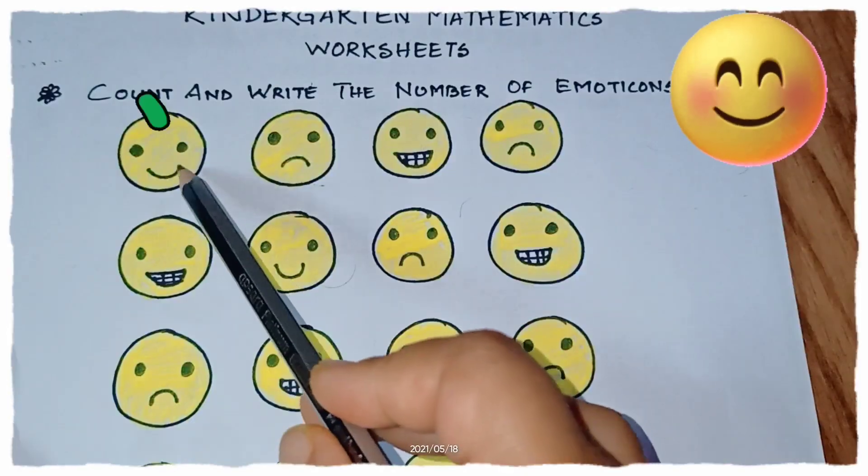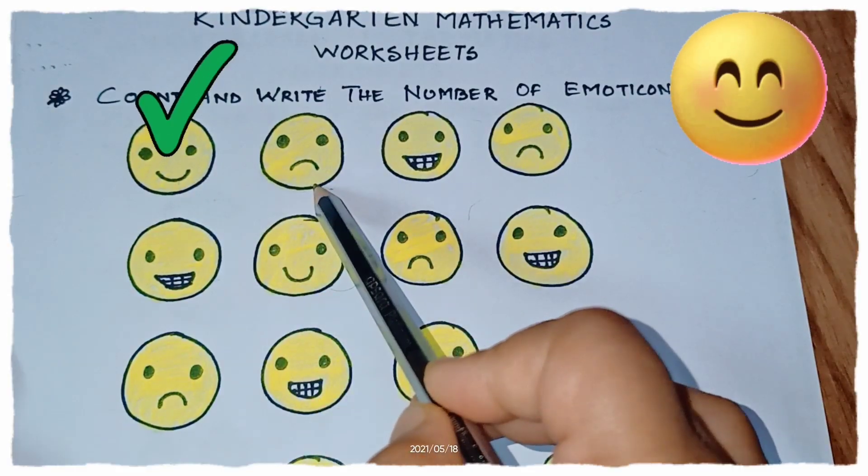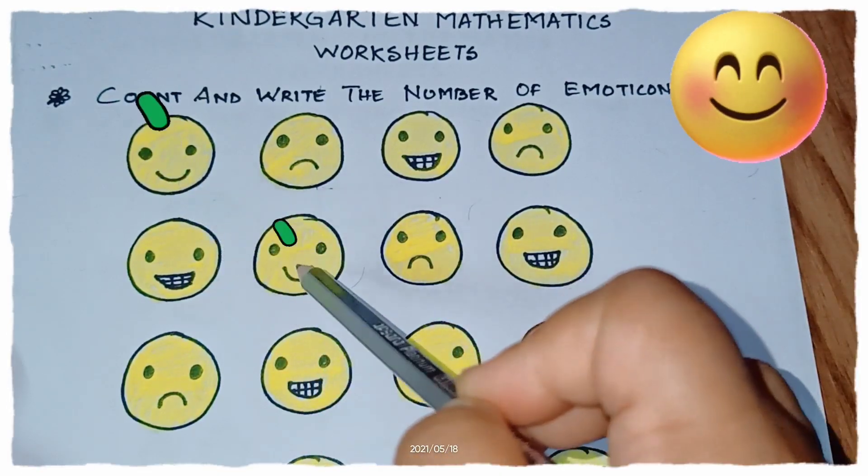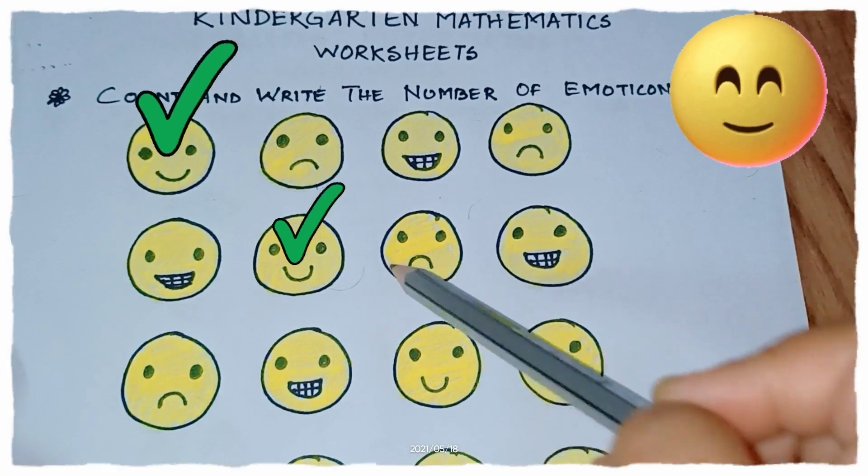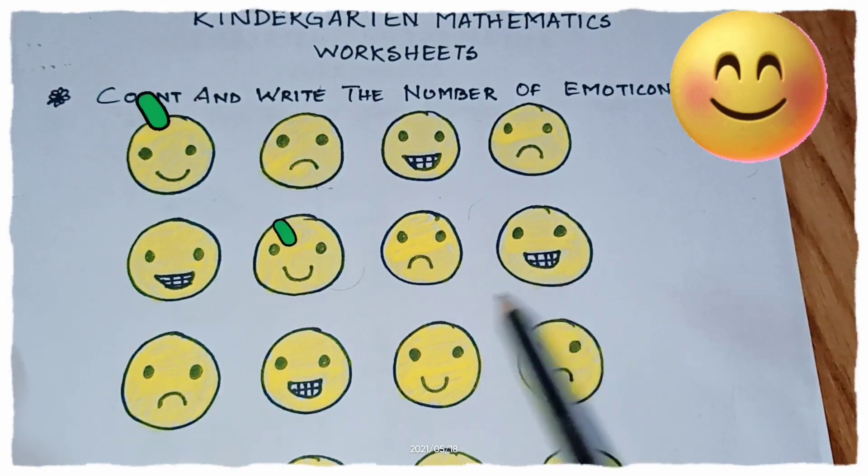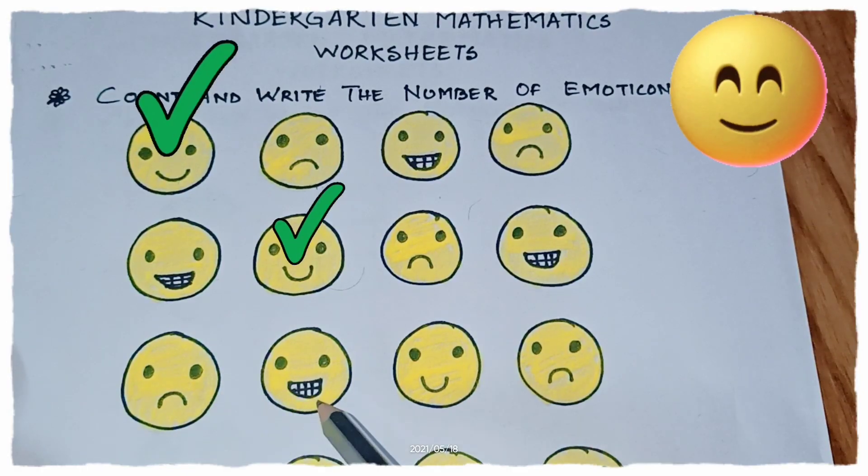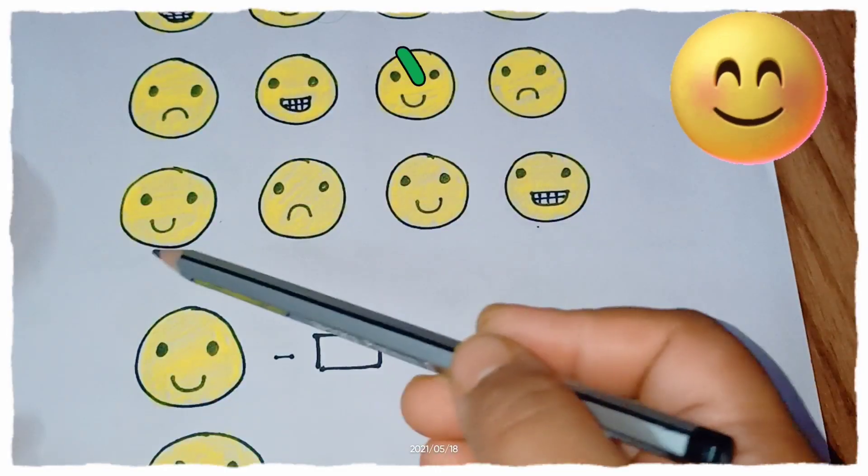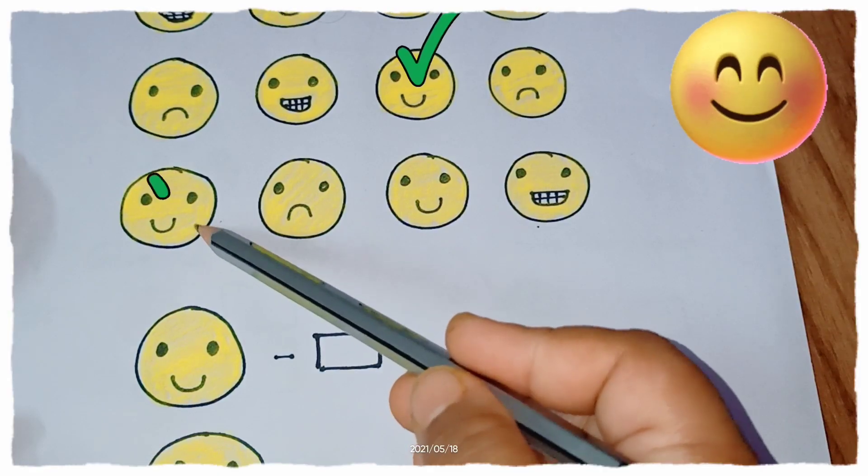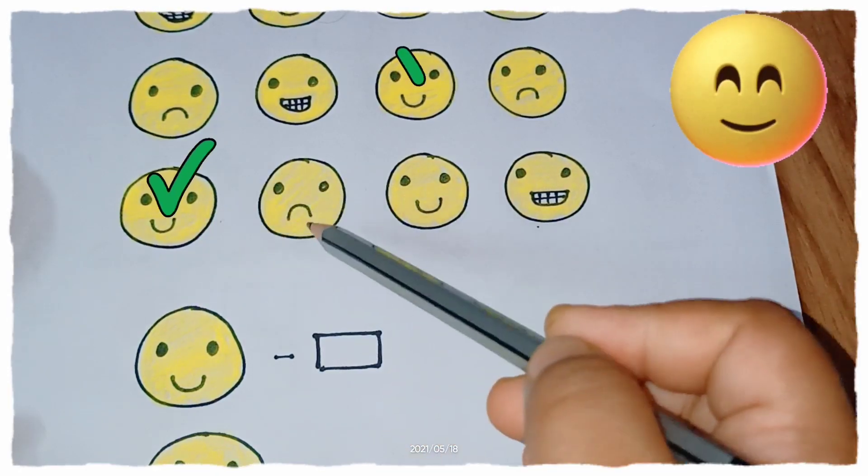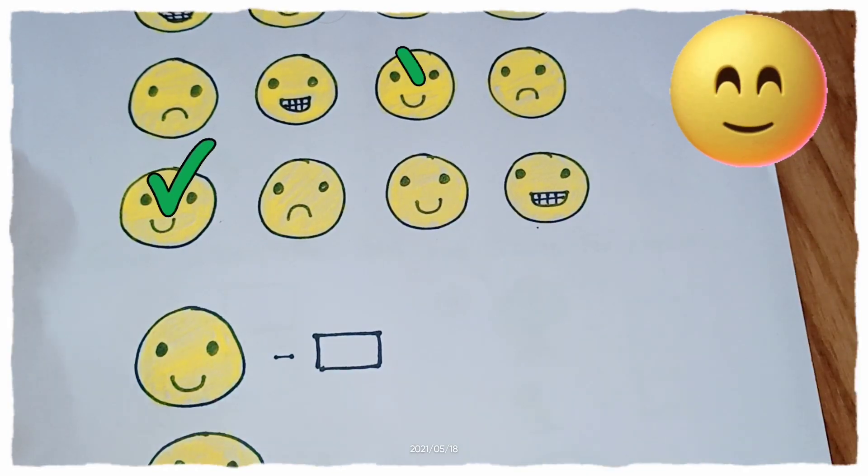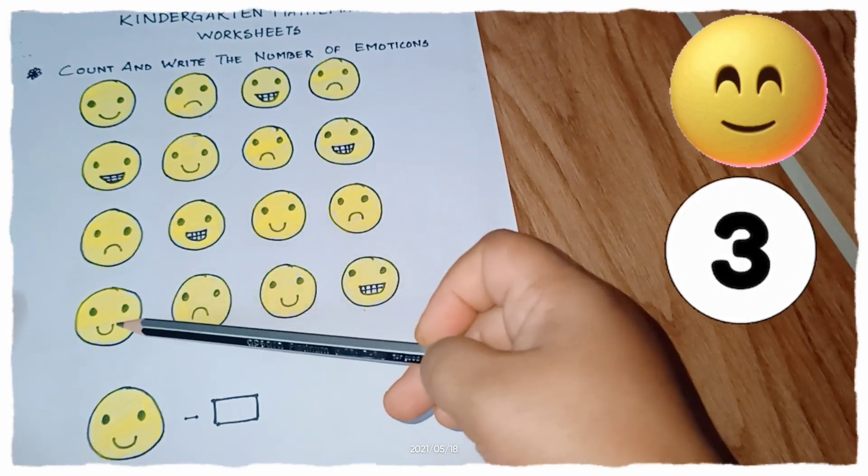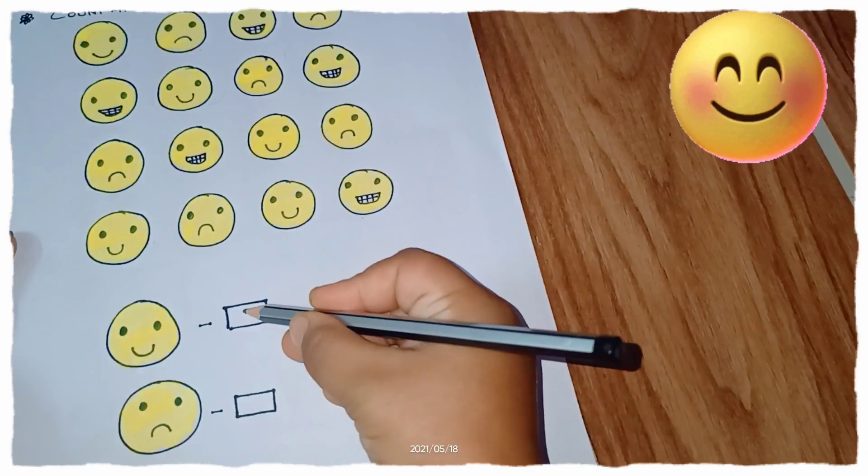First we will count and write the emoticons. So we will count the smileys. This is one smiley, and yes, this is another smiley. This is not a smiling face, no no no. Oops, yes I have found another smiling face here, another one, and let me see if I find another one. Yes, so 1, 2, 3, 4, 5. We have got 5 smiling faces.